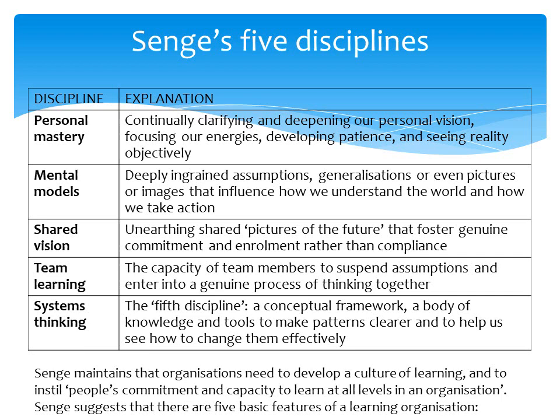Senge wrote the famous book 'The Fifth Discipline' about the learning organization. He identified five disciplines companies need to manage: personal mastery, mental models, shared vision, team learning, and systems thinking. Senge maintains that companies need to develop a culture of learning and instill commitment and capacity to learn at all levels.